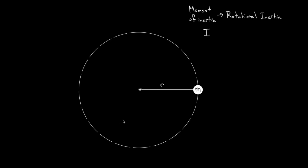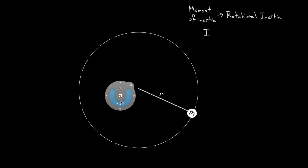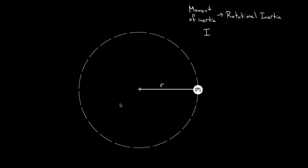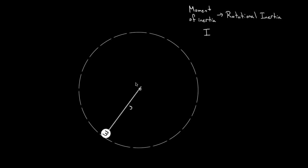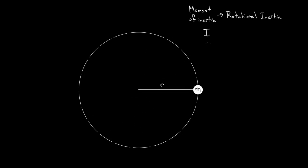If this system has a large moment of inertia, it's going to be very difficult to get this thing accelerating. But if the moment of inertia is small, it should be relatively easy to get this thing angularly accelerating. The reason you want to know the moment of inertia is because it tells you how difficult it will be to angularly accelerate something.